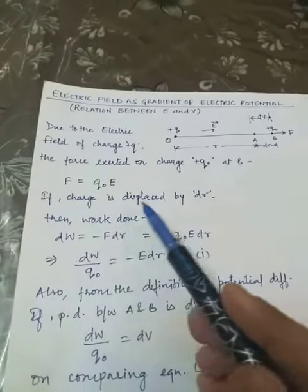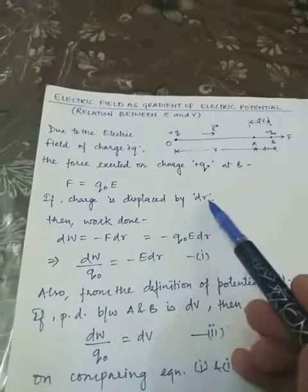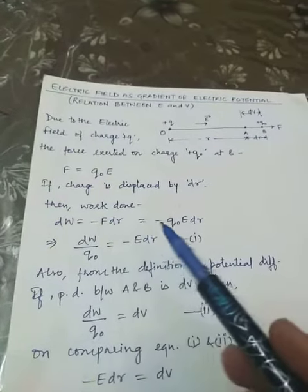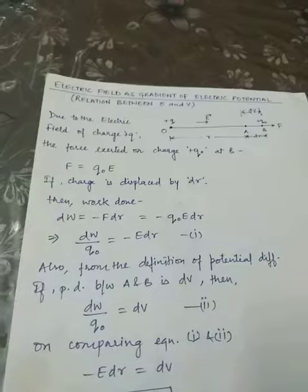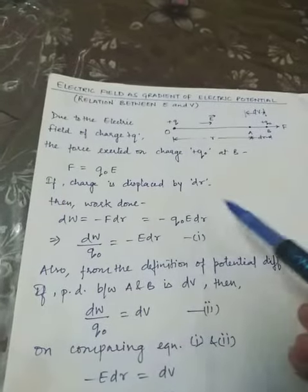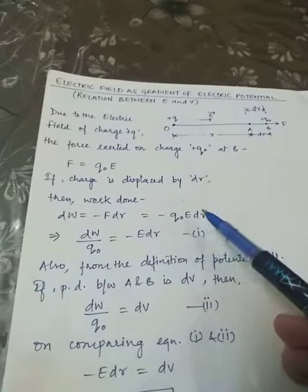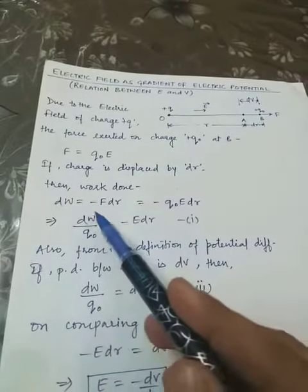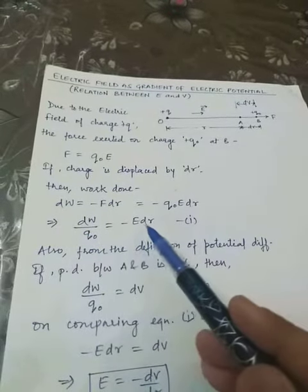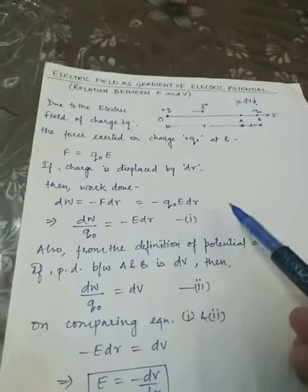If the charge is displaced by a distance DR, then work done DW equals minus F times DR. Putting the value of F, it becomes minus Q0 E DR, or it can be written as DW upon Q0 equals minus E DR. Let it be equation number one.